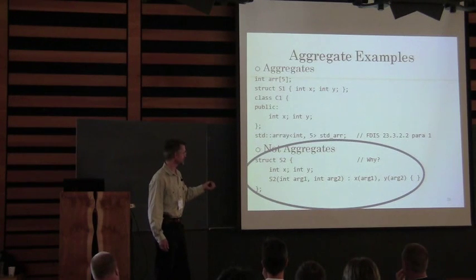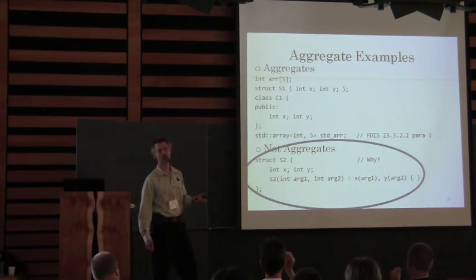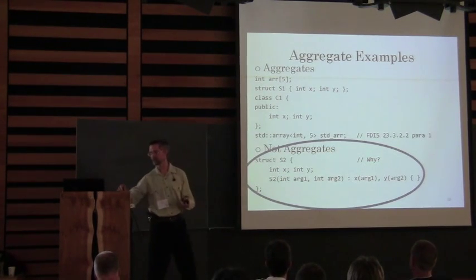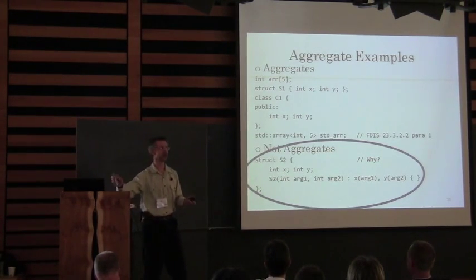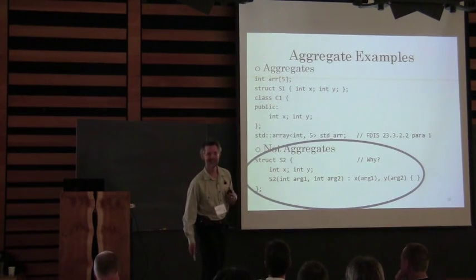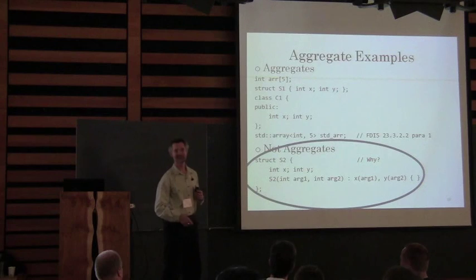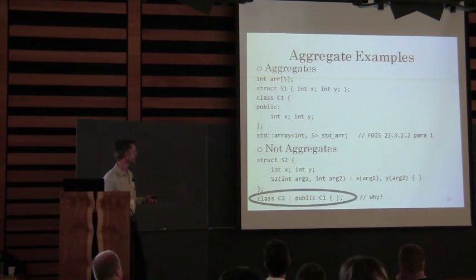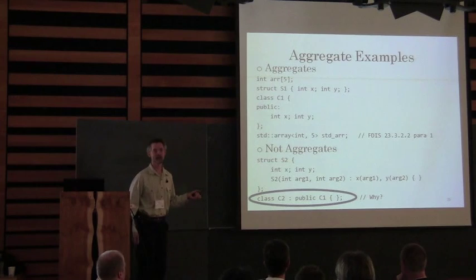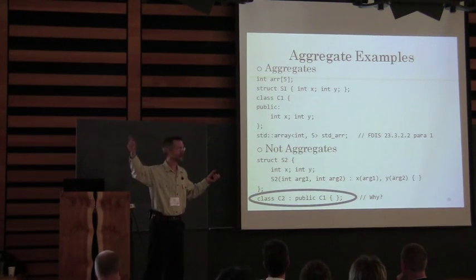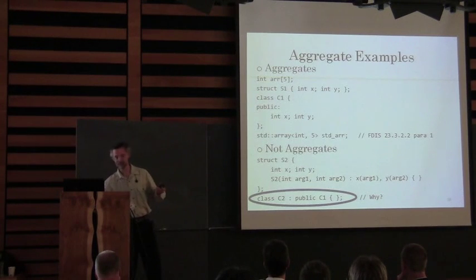This struct, even though it's a struct, is not an aggregate — it has a user-provided constructor. This class is not an aggregate either. The reason is it has a base class.